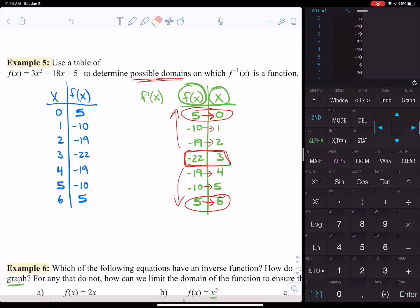So we could say, let's grab my pen, for the domain of x is greater than or equal to negative 22, or x is less than or equal to negative 22, then it would be a function. So the inverse of f(x) is a function. Alright, so that is it for example 5.